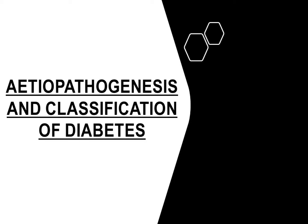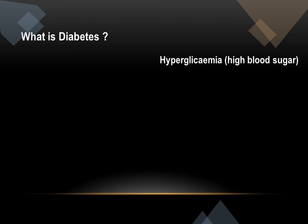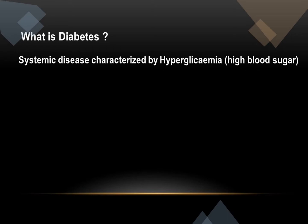Let's talk about the aetiopathogenesis and classification of diabetes. Diabetes is a systemic metabolic disorder characterized by a hyperglycemic state, which leads to various complications that we will discuss in subsequent videos.